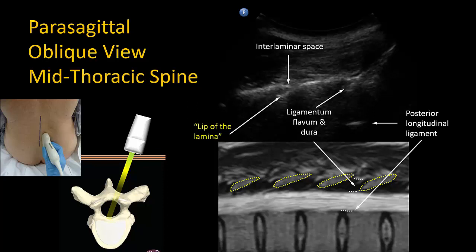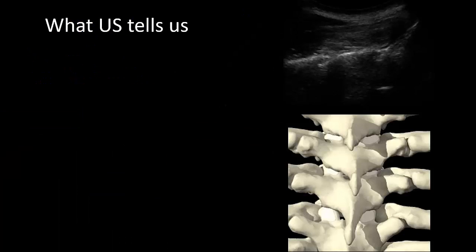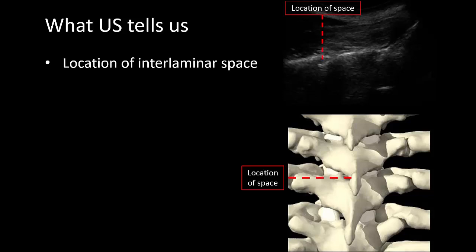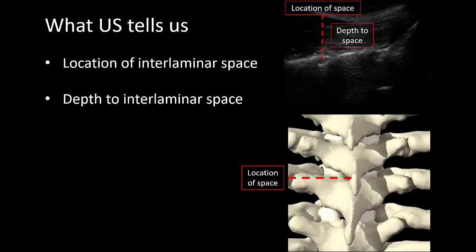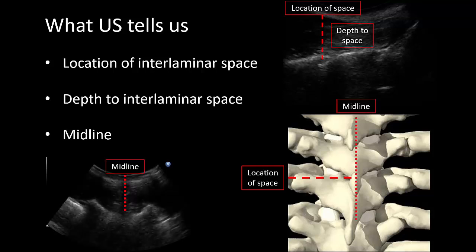Do not always expect to see the anterior and posterior complexes, except perhaps in young patients with flexible spines or in the lower thoracic spine. From these images we gain three pieces of information: first, we know and can mark the transverse plane in which the interlamina space is located; second, we can measure the depth to the lamina, giving us the minimum needle depth required to reach the epidural space; third, we can mark the position of the midline if this cannot be easily palpated. With these three pieces of information, we should be able to more easily triangulate our needle approach to enter the thoracic epidural space.